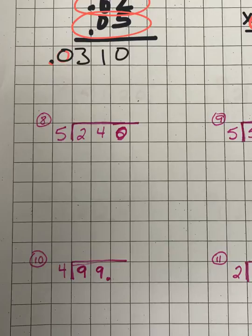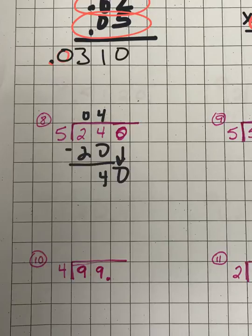Number eight, division, is pretty straightforward. You just ask yourself: five goes into two how many times? It doesn't go in at all — some people write zero, some people don't; either way is fine. Five goes into 24 four times. Four times five is 20. You subtract them, you get four. Bringing down this zero — how many times does five go into 40? It goes in eight times. So the answer is 48.